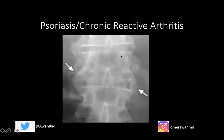In psoriasis and chronic reactive arthritis, we have paravertebral ossification — dense ossification starting from the middle of one vertebral body to the middle of the next. It can look like a thick comma-shaped ossification. This is ossification of the paravertebral soft tissues, from mid vertebral body to mid vertebral body, seen in psoriasis and chronic reactive arthritis — in contrast to the syndesmophytes seen in IBD arthropathy and ankylosing spondylitis.